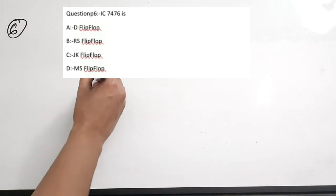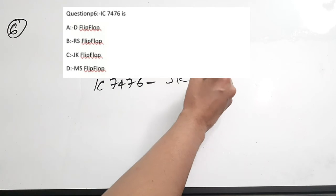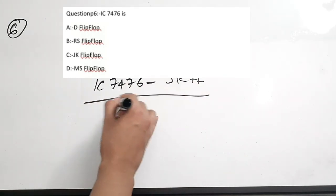For this junior instructor examination, you can expect questions from moderate to easy level — not very difficult. Sixth question: IC7476 is a dash. Options are D flip-flop, RS flip-flop, JK flip-flop, or MS flip-flop. IC7476 is actually a JK flip-flop. Correct answer is option C.